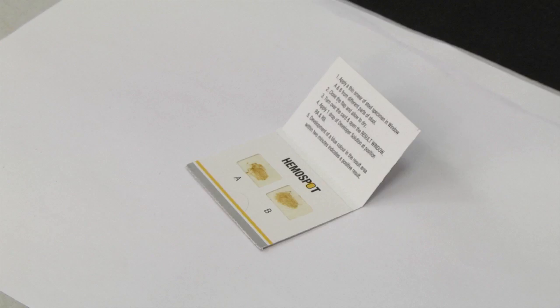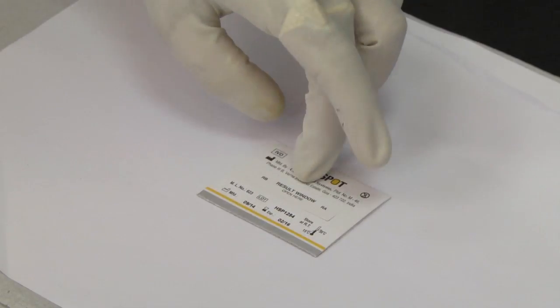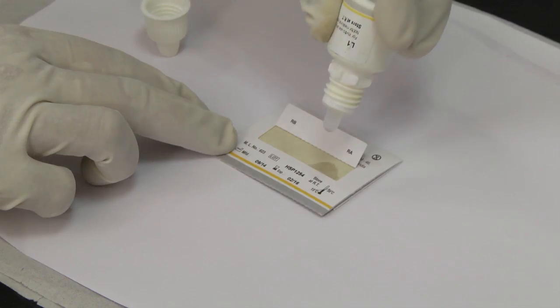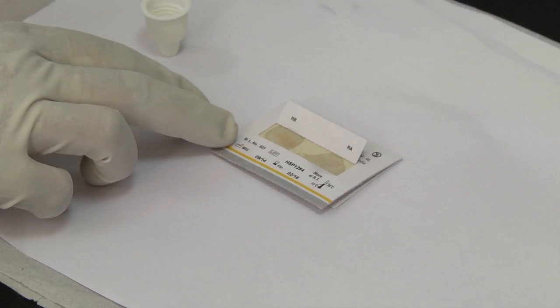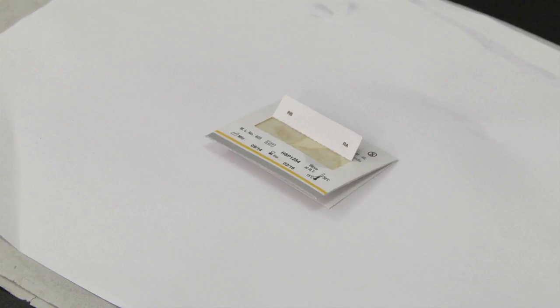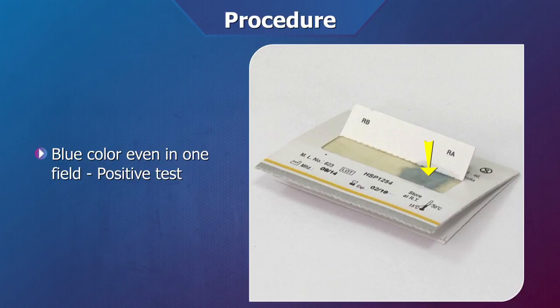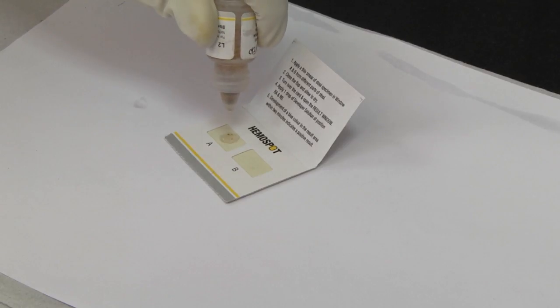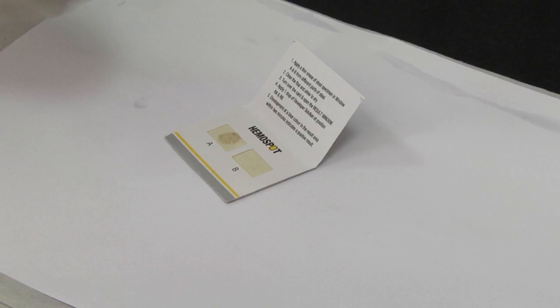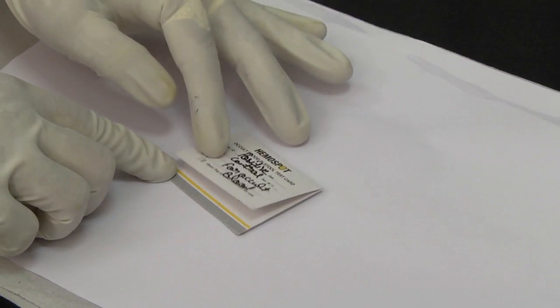Wait until the smeared sample has dried completely. Turn over the test card, open the result window, and add one drop of developer to fields RA and RB — the reverse side of the sample smeared on the sample application windows respectively. Observe for color change exactly at 2 minutes. Even if one of the fields has a blue color, the test is positive for occult blood. Positive control available with the kit should be run along with the test samples to assess the efficacy of the test cards.